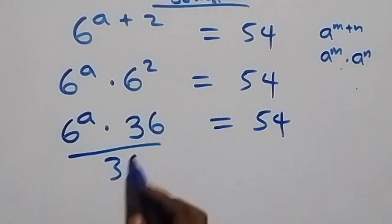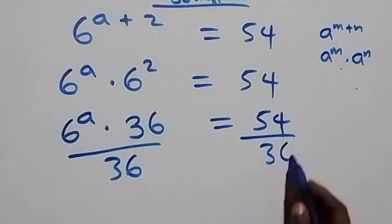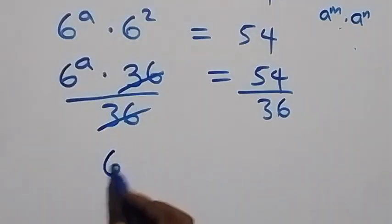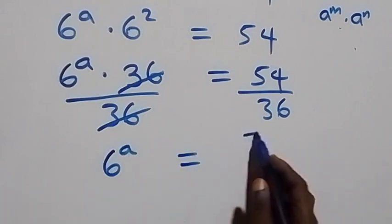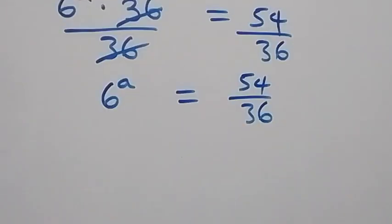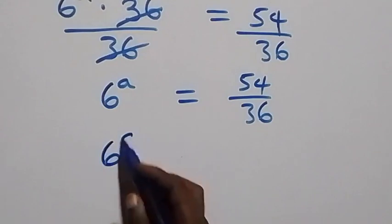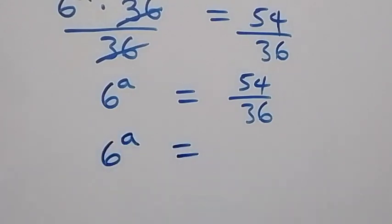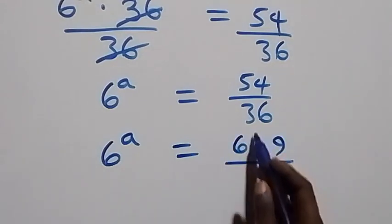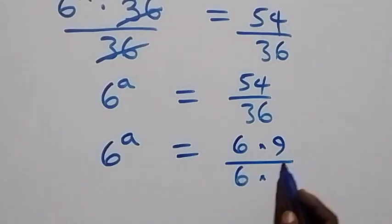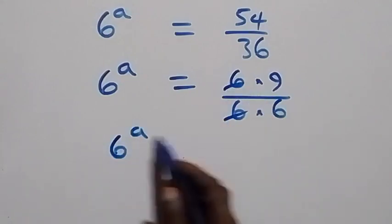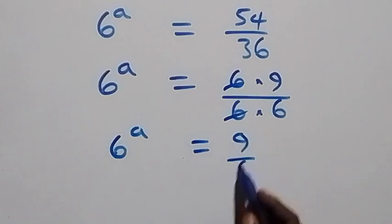That is 6 raised to power a times 36 equals 54. From here, the next step is we divide both sides by 36. So 36 cancels each other and we have 6 raised to power a equals 54 over 36, which can also be written as 6 raised to power a equals 54 written as 6 times 9, over 36 written as 6 times 6. Then 6 cancels each other, so we have 6 raised to power a equals 9 over 6.